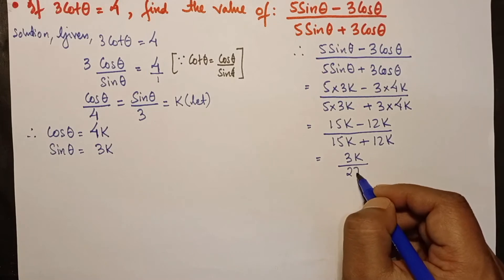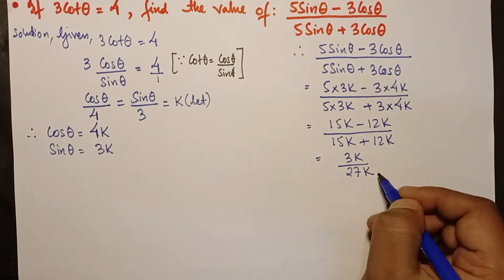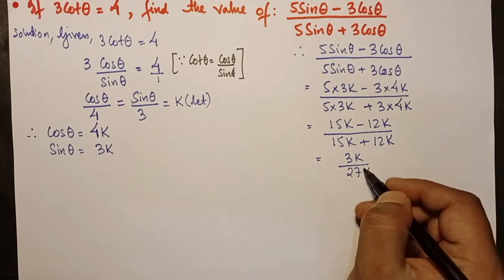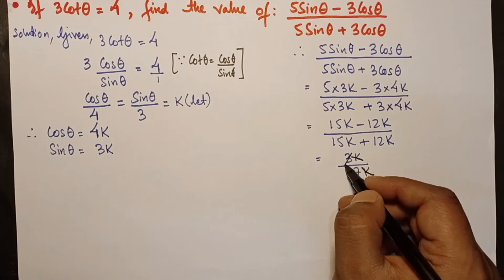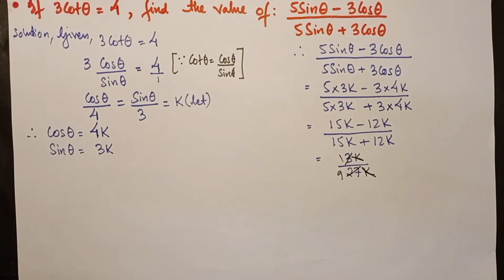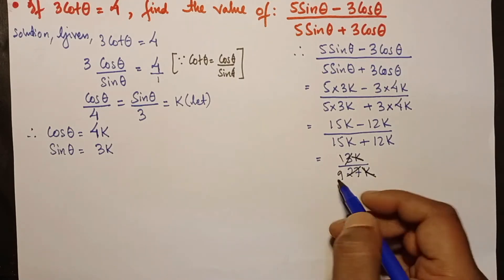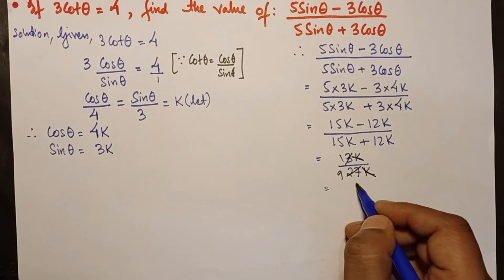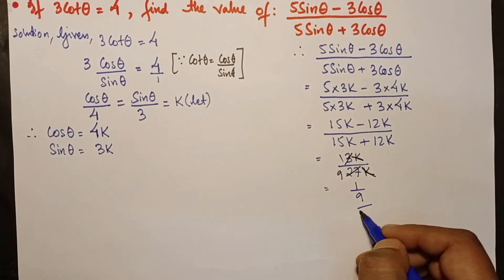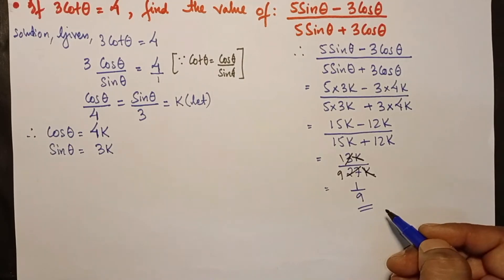So we get (15k - 12k) / (15k + 12k) = 3k / 27k. The k's cancel, and 3/27 simplifies to 1/9. So the final answer is 1/9.